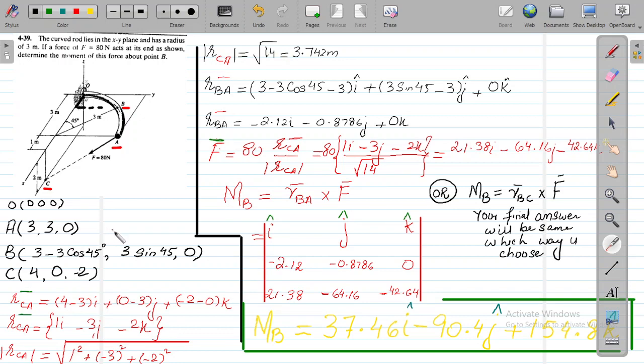Now what we need to do is, once this is done, now we need to calculate RCA because our target is to convert this 80 Newton force into Cartesian vector form. What we are going to do is take the position vector RCA and divide by its magnitude. So the coordinate of C is 4, 0, -2 and the coordinates for A is 3, 3, 0.